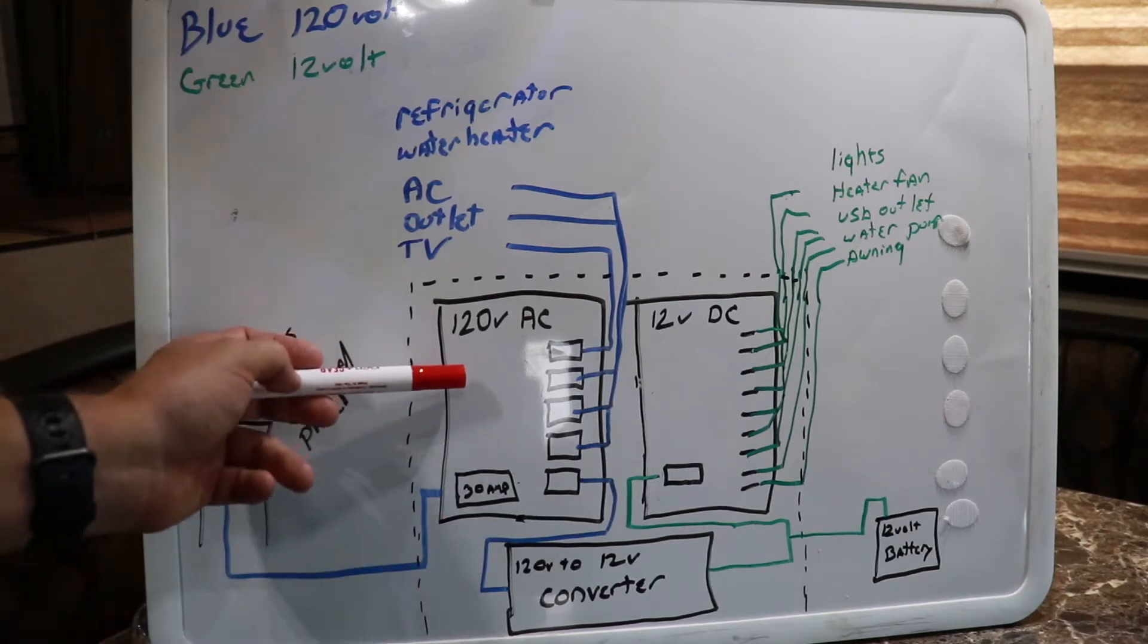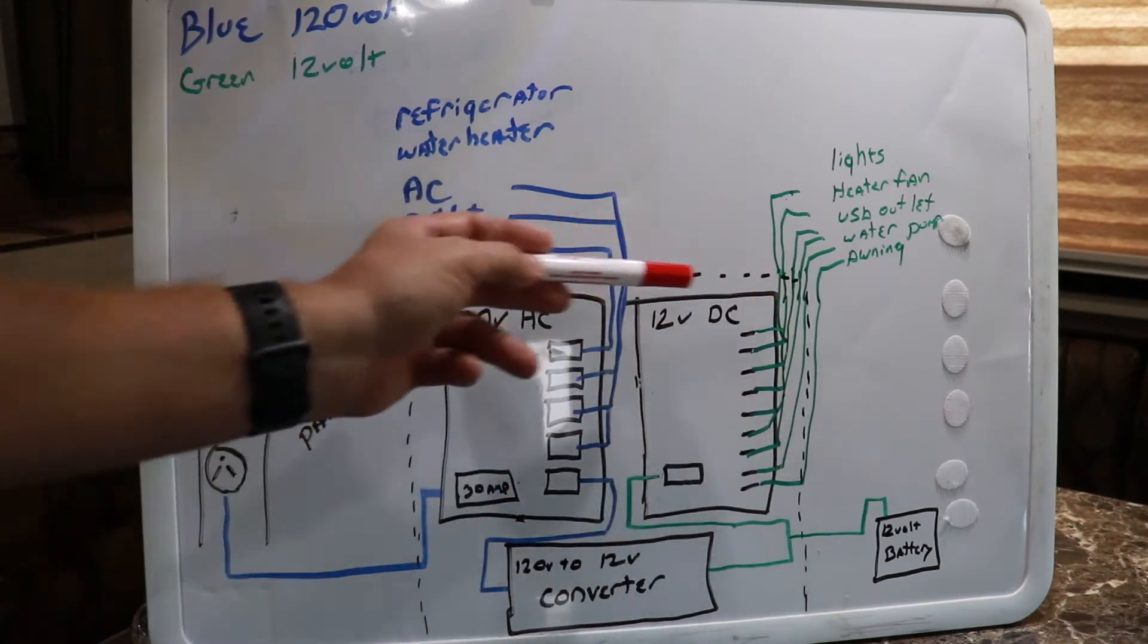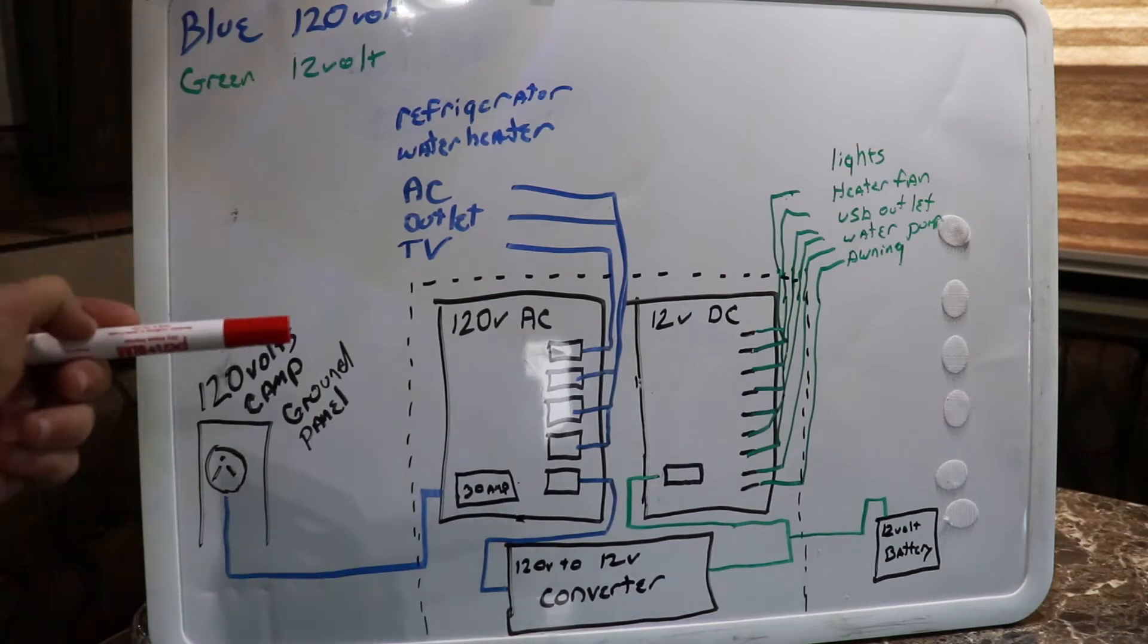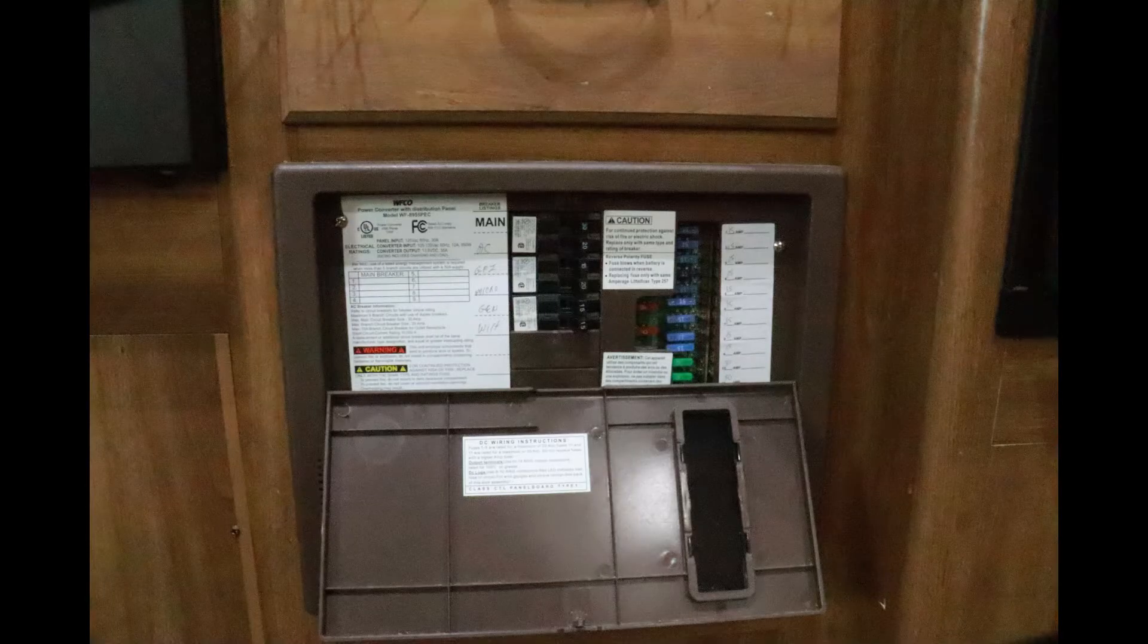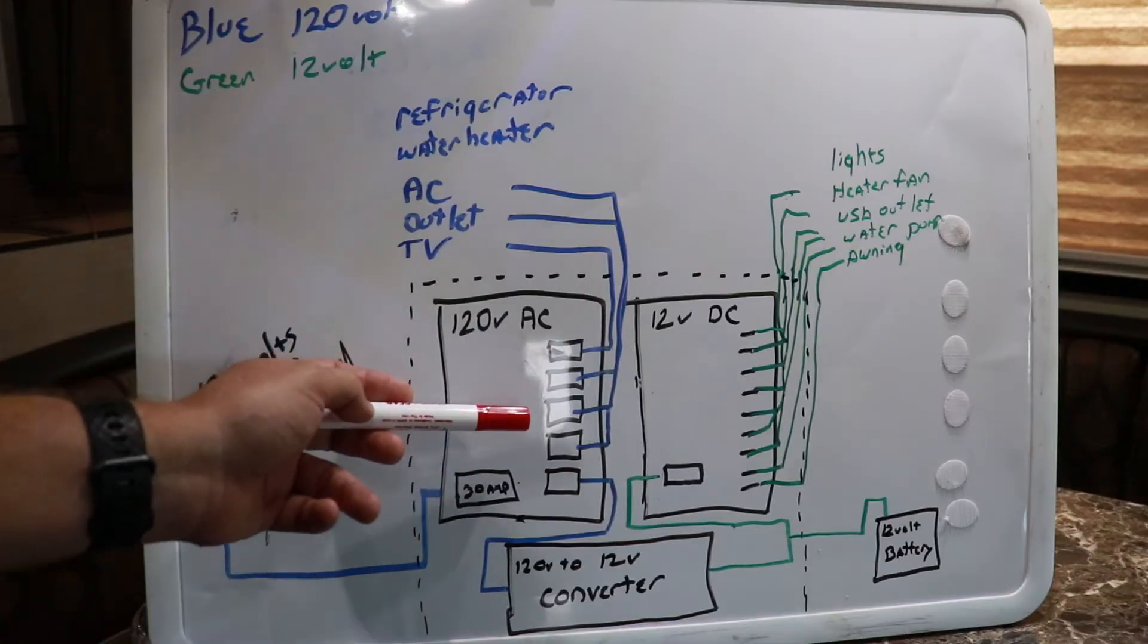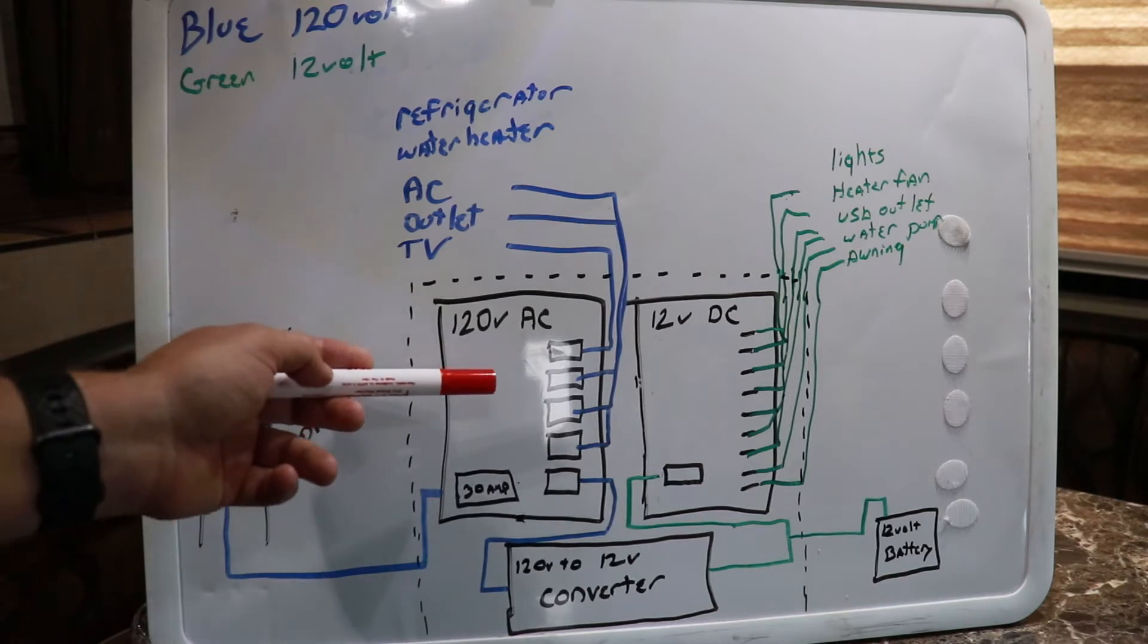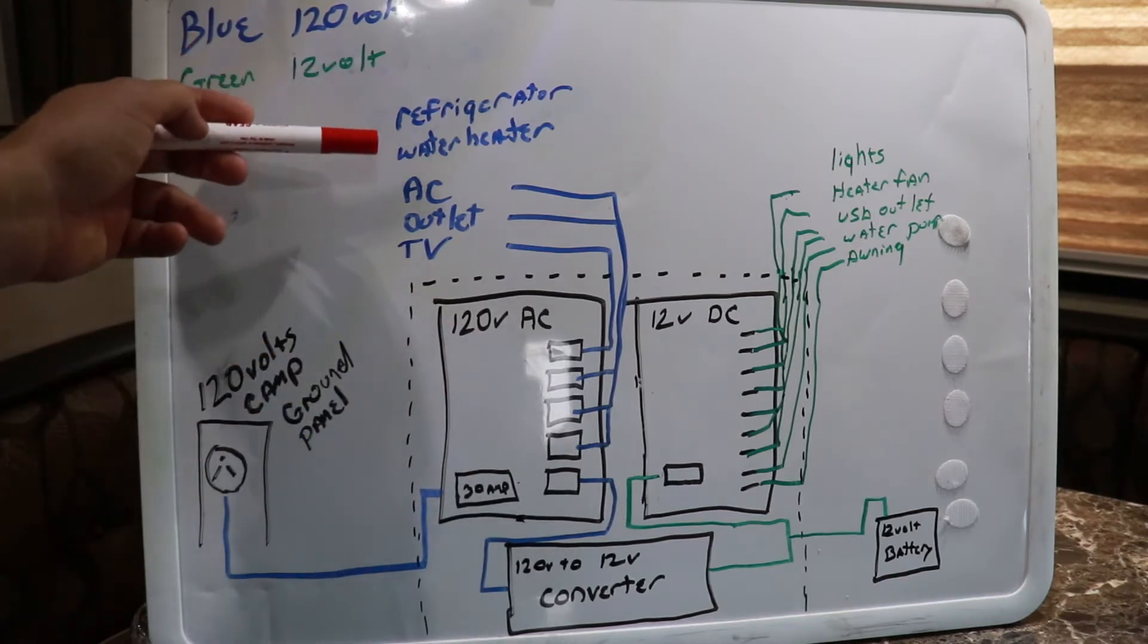The fuse panel is actually represented by this black box. It'll look like this in your camper. Once the power comes in, there'll be house breakers. They'll look just like the same breakers you have in your house, a little flip style. The 120 side will run like your refrigerator, your water heater, your AC, your outlets, your TVs, things of that nature.